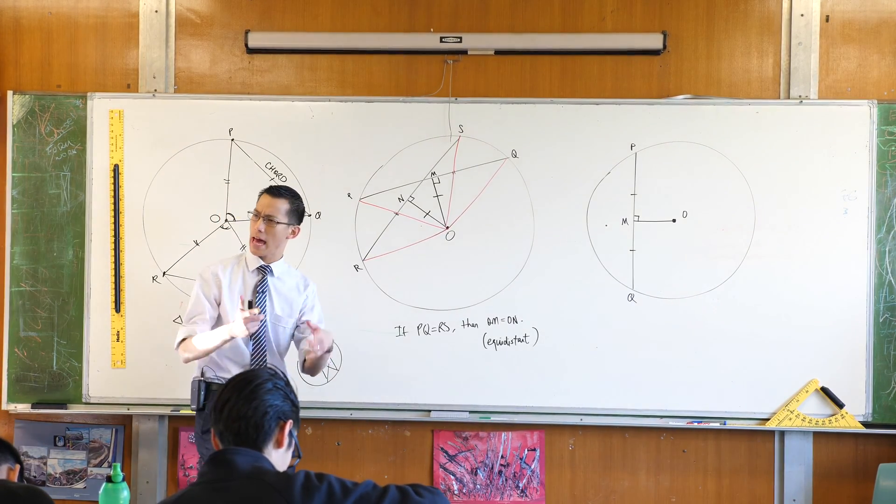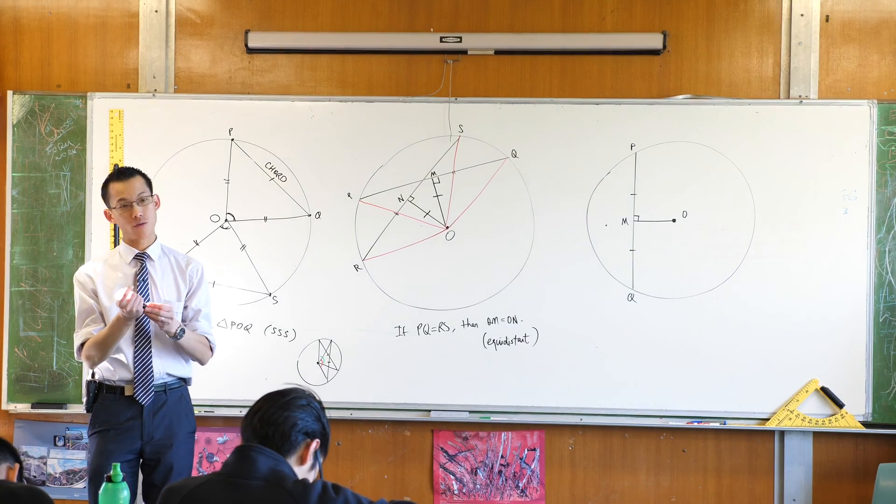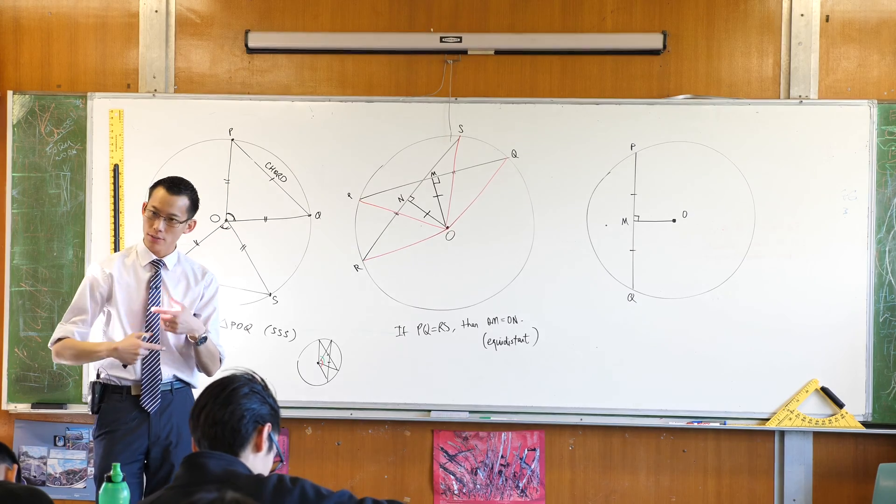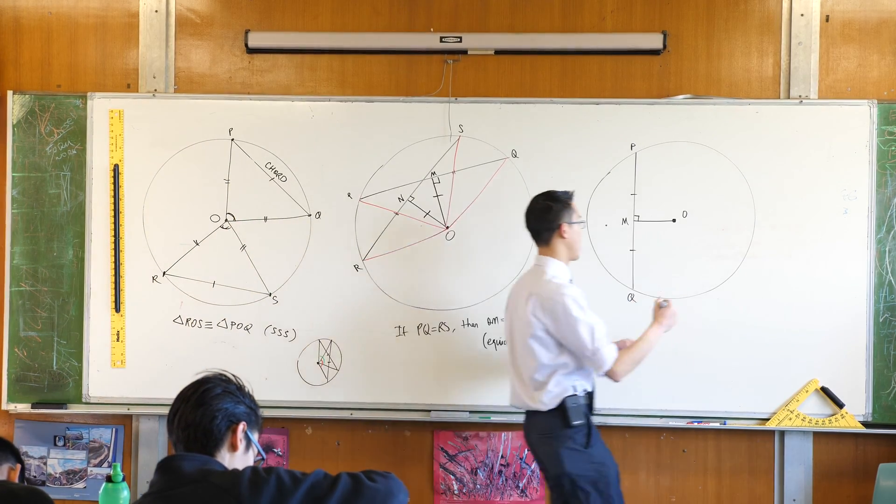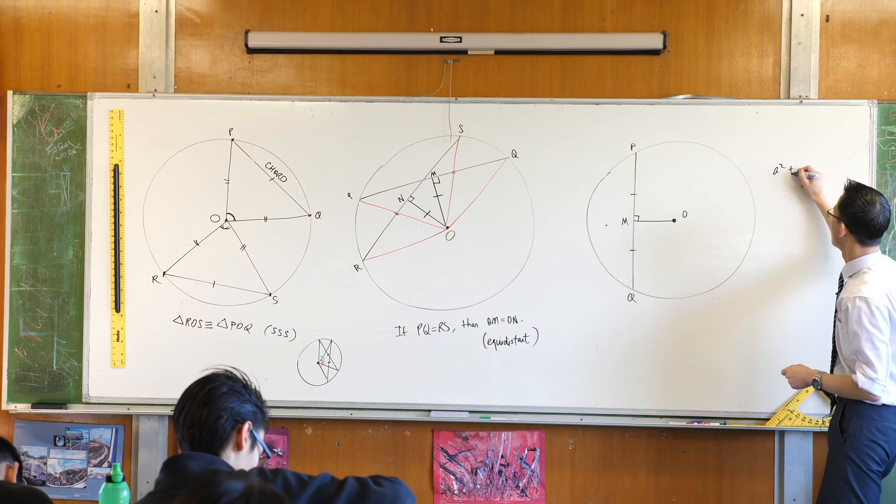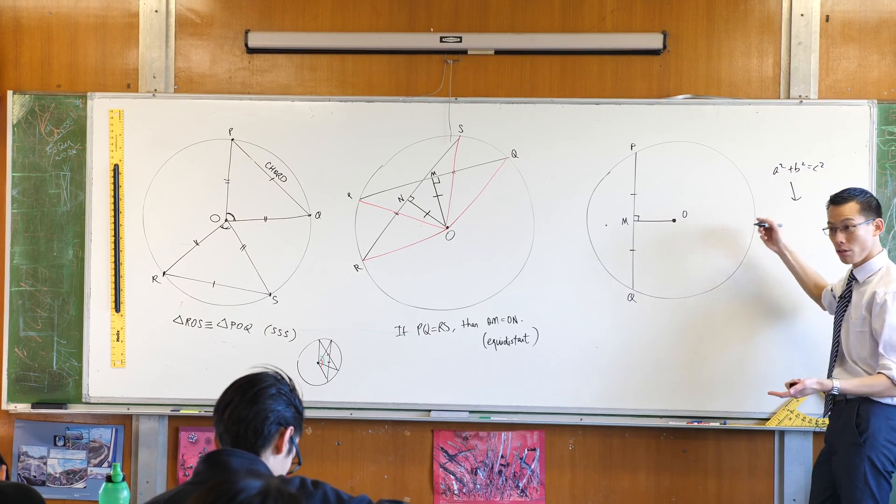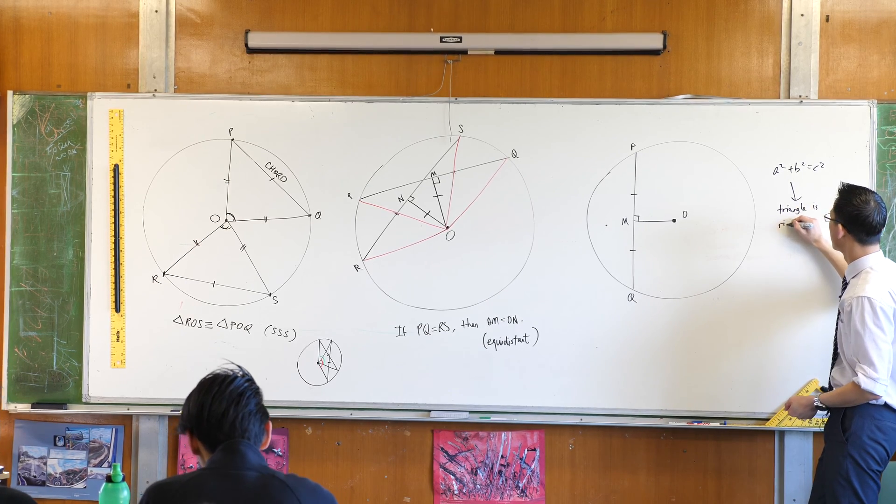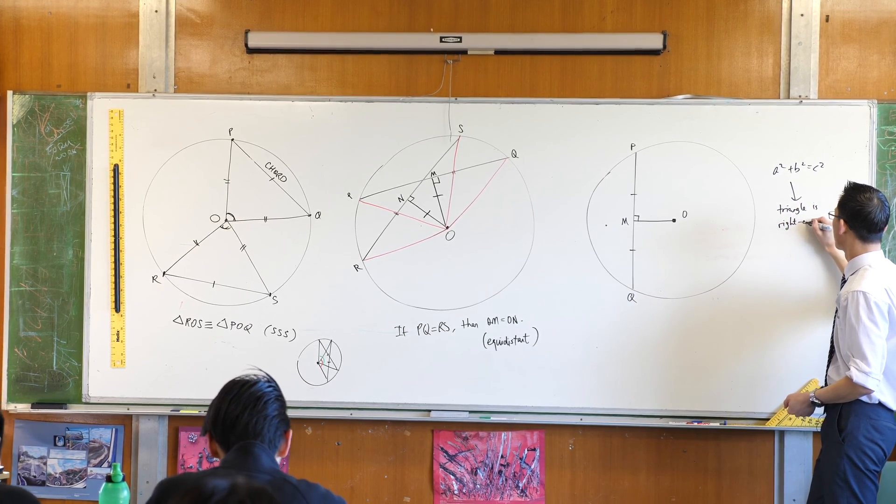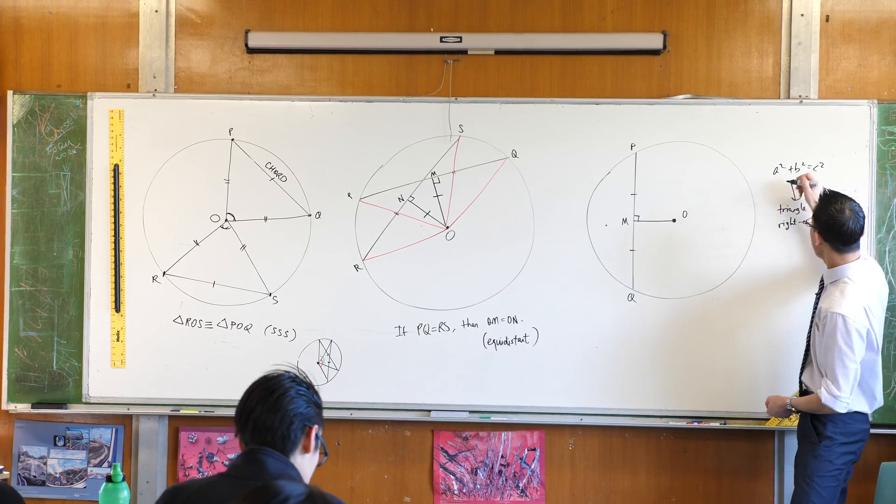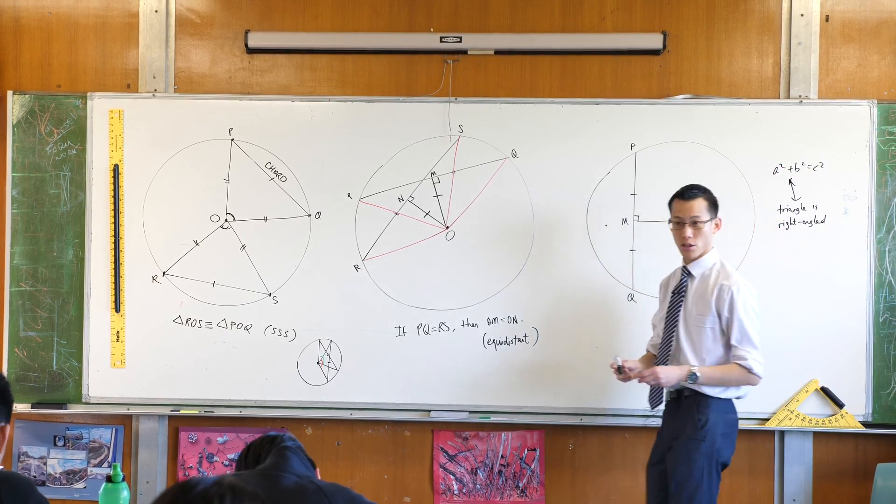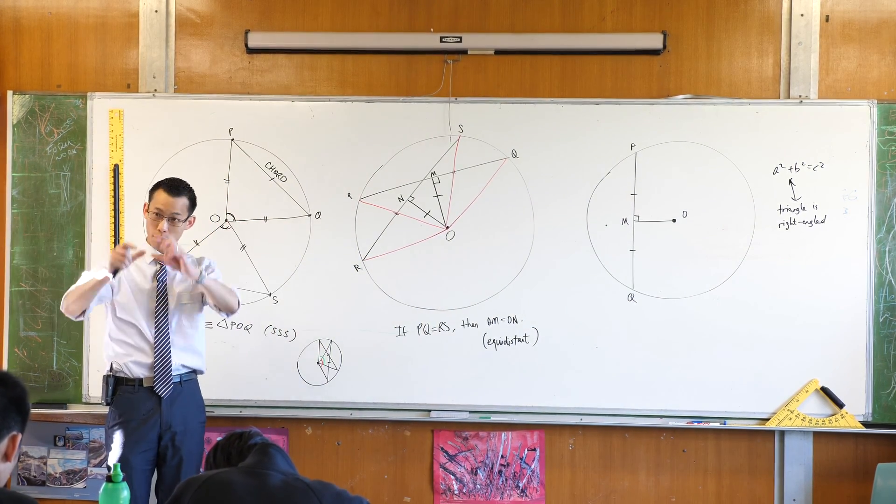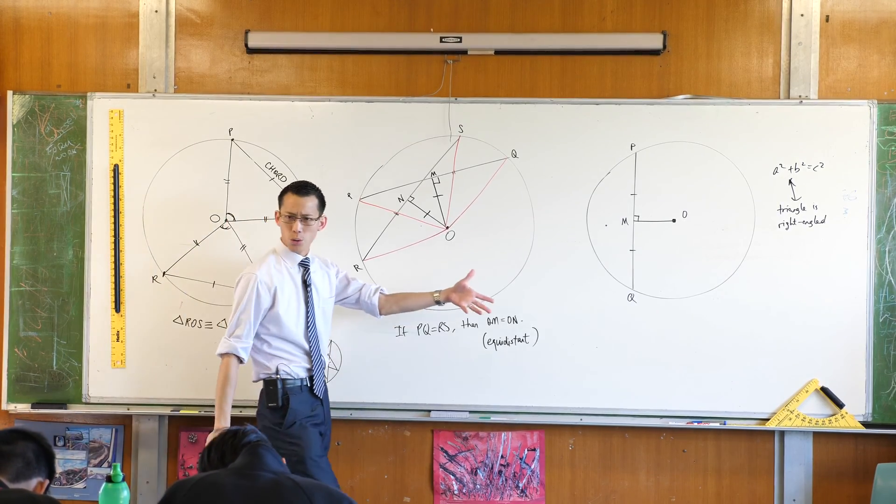And this goes both ways. You know Pythagoras, how if you know that something's right angled, you can say a squared plus b squared equals c squared? Pythagoras is lovely because its converse is true. If you know that a squared plus b squared equals c squared, you can then conclude that the triangle is right angled.